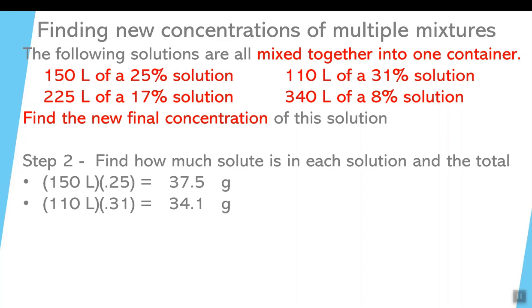So you don't have to worry in this particular question about what the mass unit is going to be. Third one is 225 liters of 0.17. And when you multiply those two together, it works out to about 38.25. And the last one is 0.08, which is 8%. So 340 liters times 0.08 is 27.2.